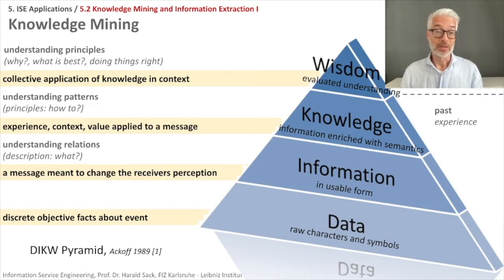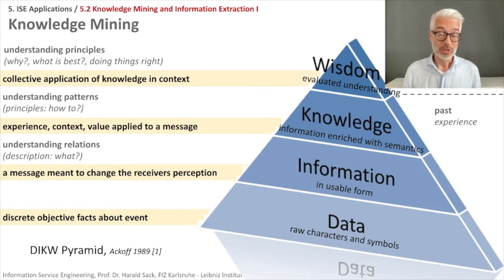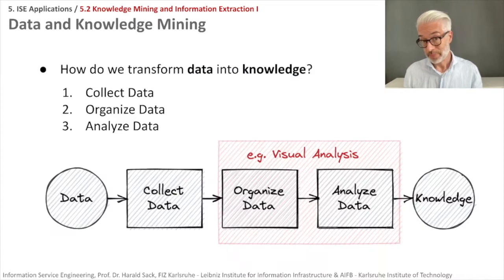This can be nicely visualized as the famous DIKW pyramid, as drawn by Ackoff in 1989. At the base layer you have data — raw characters and symbols. Then information in a usable form where you can relate things to each other. It becomes knowledge only when you enrich it with semantics, putting meaning in there. And if you evaluate your understanding, you finally come to wisdom — you can make predictions, understand underlying principles, and know what is best and how to do things right.